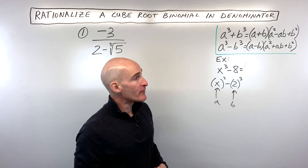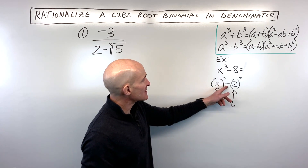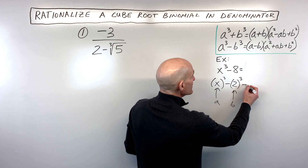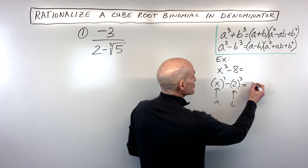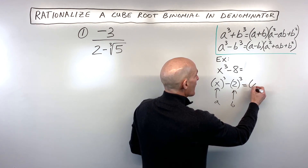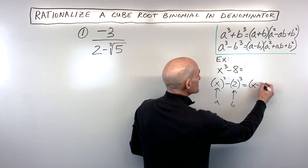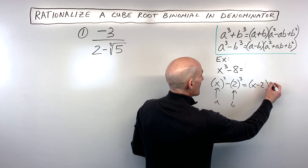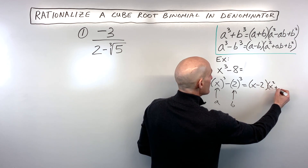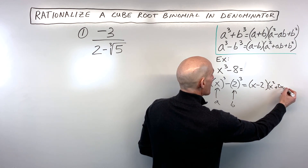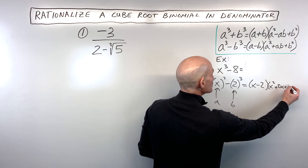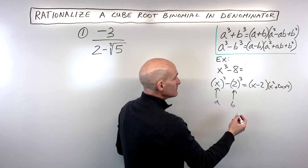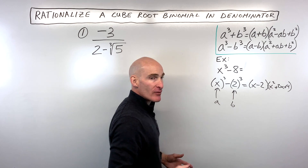So if we factor this, because it's a difference of two cubes, we use the difference of two cubes formula. It factors to (x minus 2)(x squared plus 2x plus 4), since two squared is four. And now we have it factored.